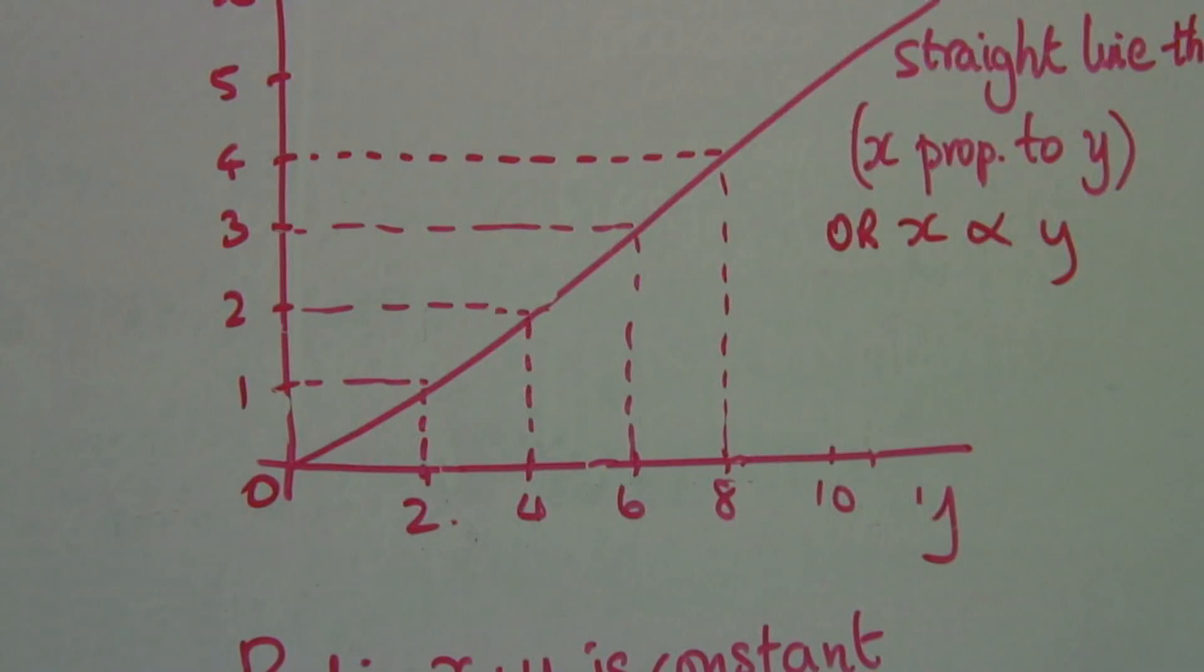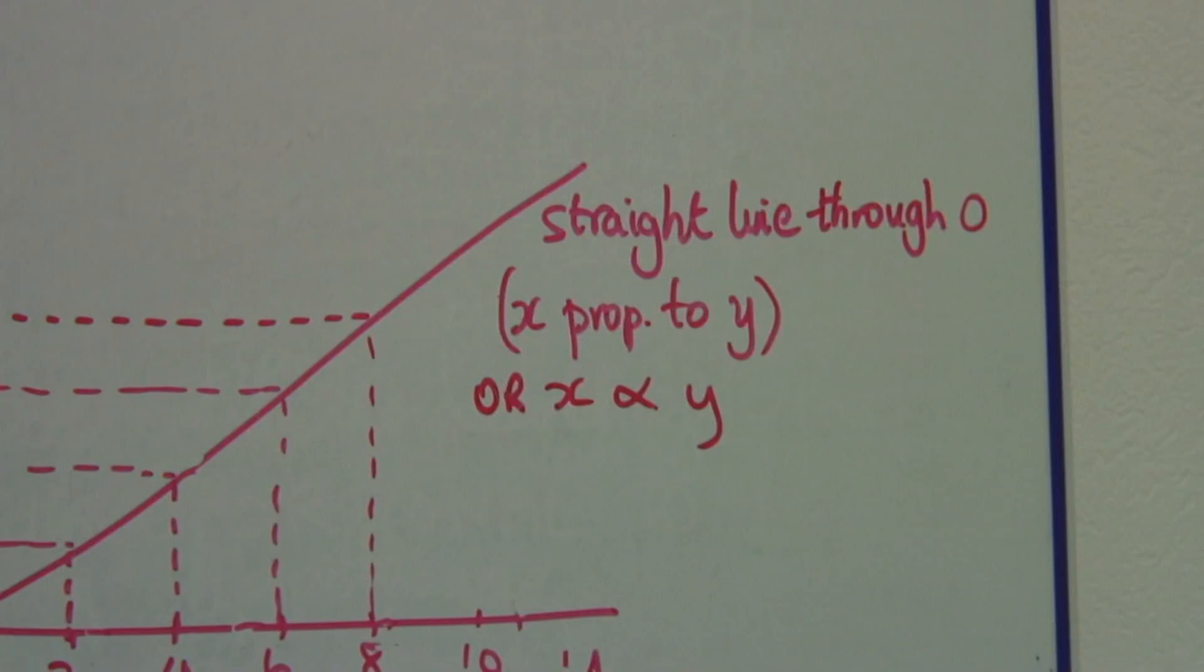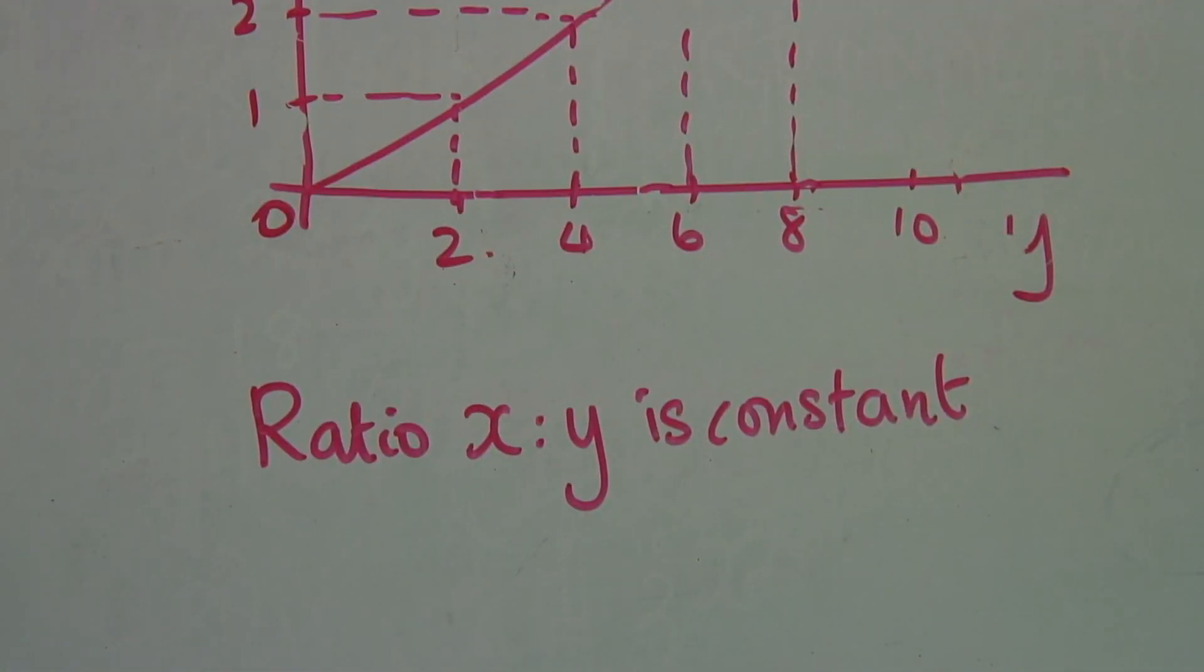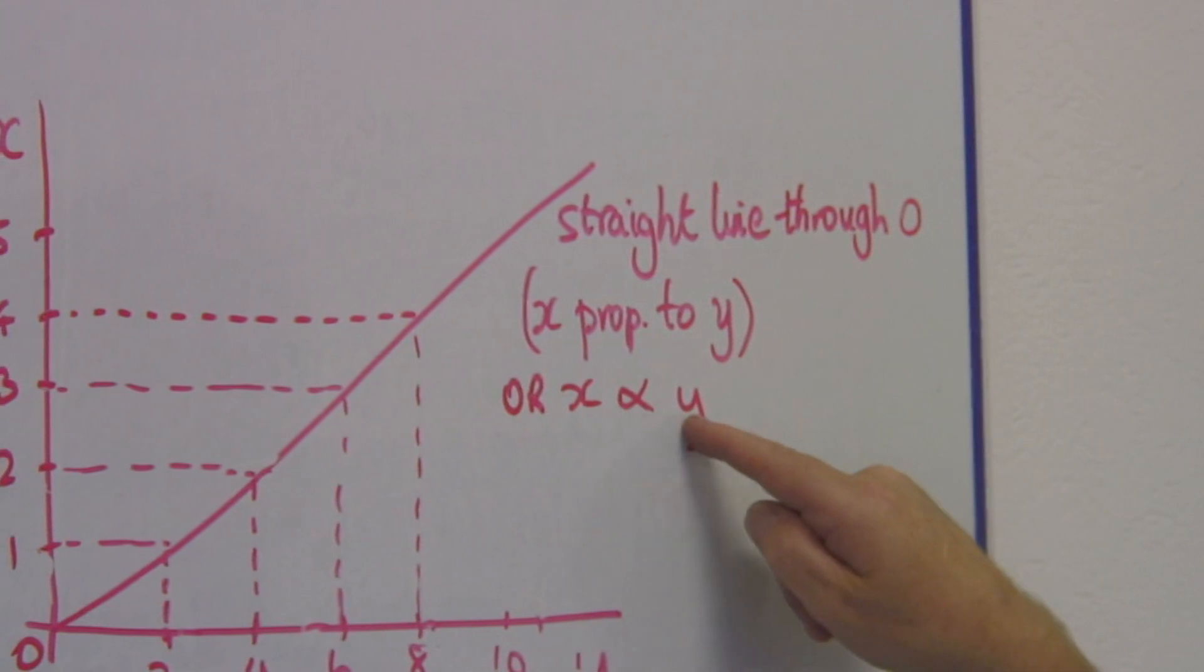From this, if the ratio is constant, I can say that x and y are proportional. x is proportional to y. And I can write it, x with this funny symbol, looks like an infinity without an end, y. x is proportional to y.